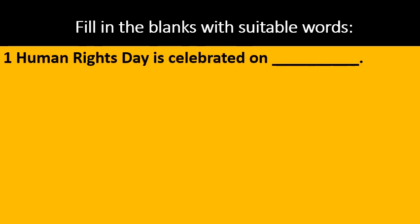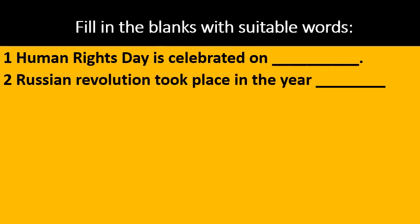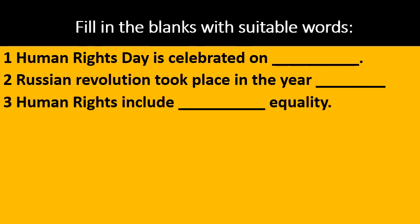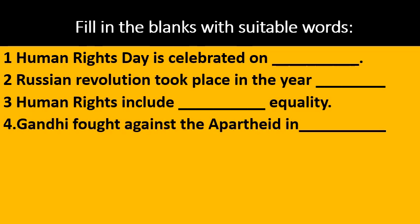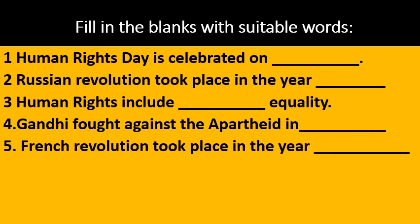Now, fill in the blanks with suitable words. First: Human Rights Day is celebrated on ___. Second: Russian Revolution took place in the year ___. Third: Human Rights include ___ Equality. Fourth: Gandhi fought against the Apartheid in ___. Fifth: French Revolution took place in the year ___. These are the five questions you will have to answer.